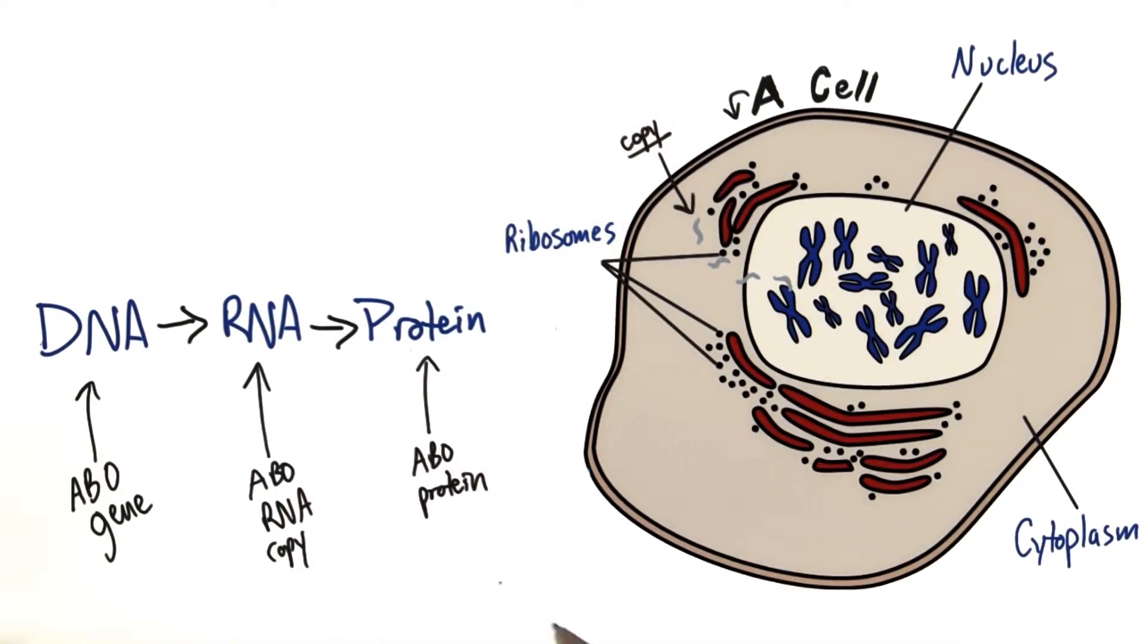So if we follow the central dogma in our example of blood type, our ABO gene made of DNA is going to be turned into an ABO RNA copy that can be trafficked to the cytoplasm, and here it will be turned into the ABO protein by ribosomes.